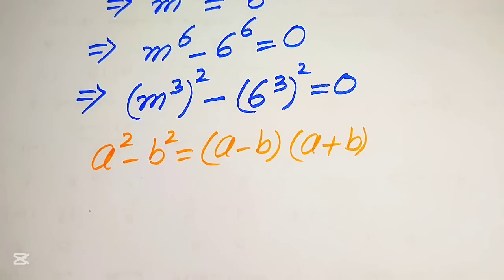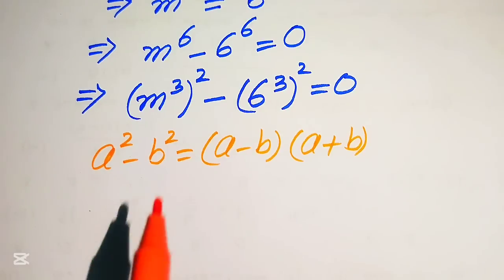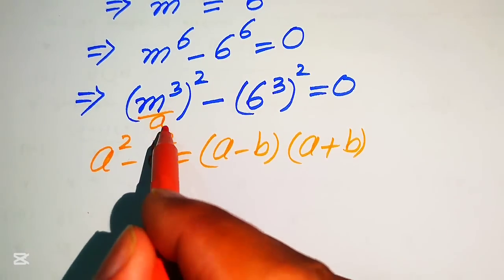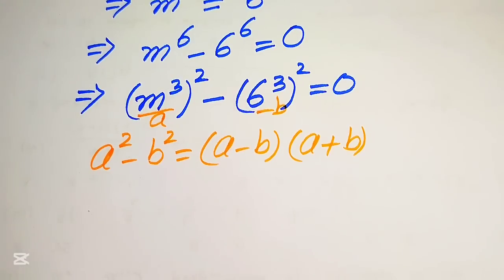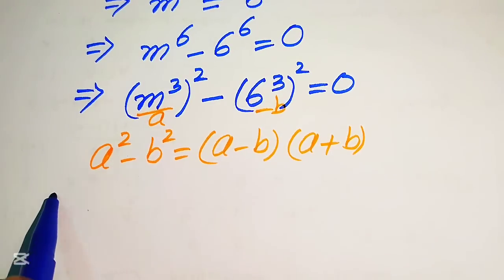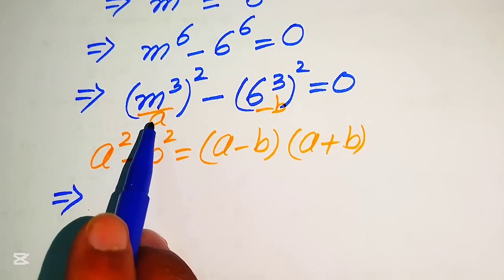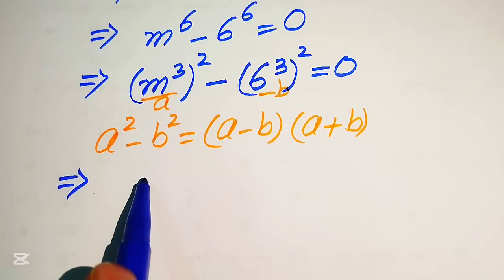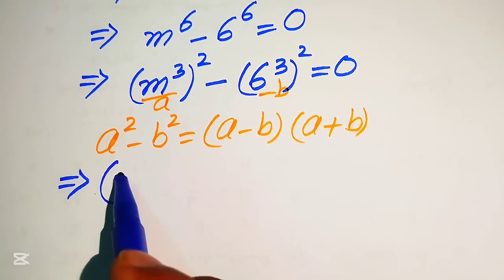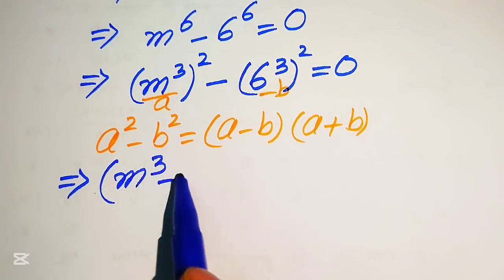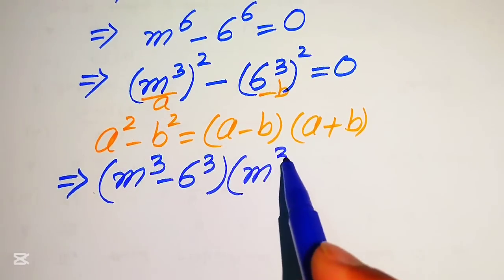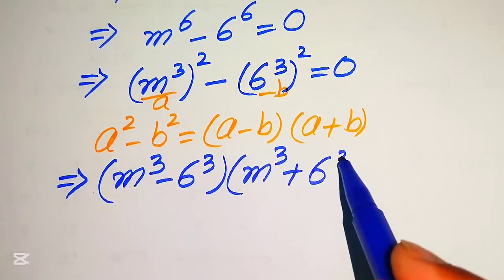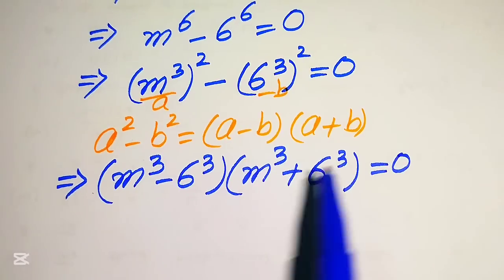According to this algebraic formula, in our equation the value of a is m cubed and the value of b is 6 cubed. We substitute these values into the formula. After substituting, our equation becomes m cubed minus 6 cubed, times m cubed plus 6 cubed, equals to 0.